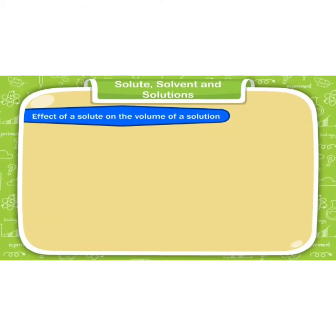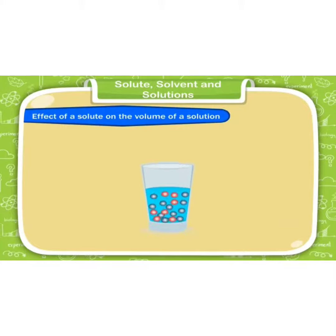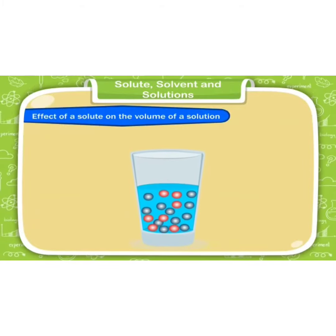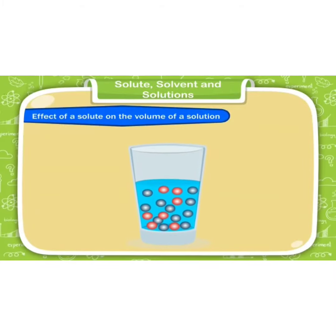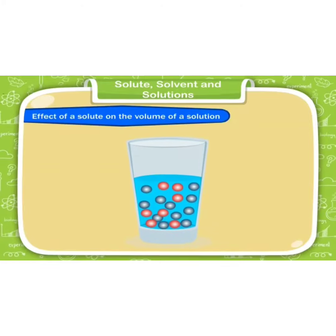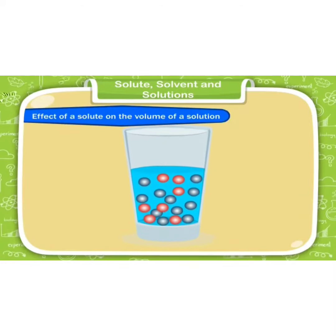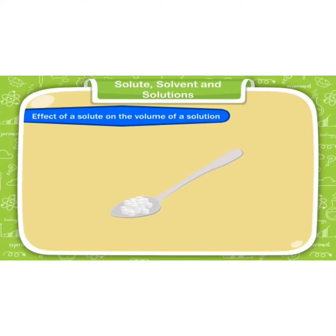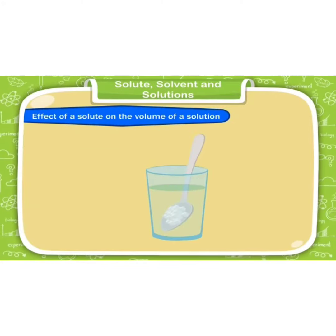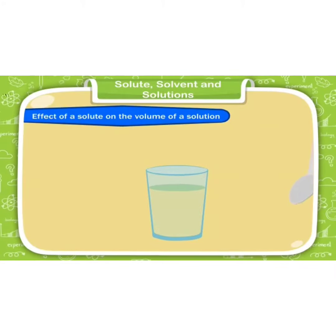Effect of solute on the volume of a solution. The level remains almost the same when we add solute in solvent. The molecules of liquid are loosely packed. They have empty space between them. When sugar dissolves in water, its molecules fill the empty spaces between the water molecules. That's why there is no increase in the level of water.